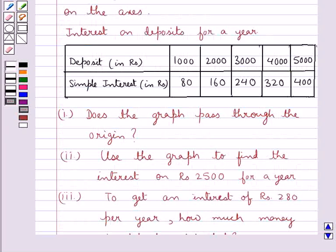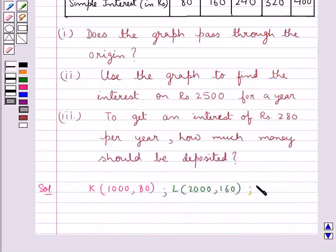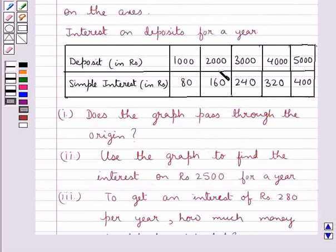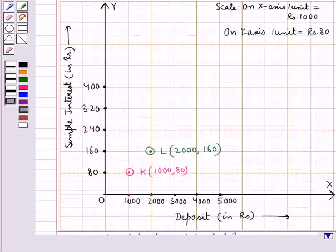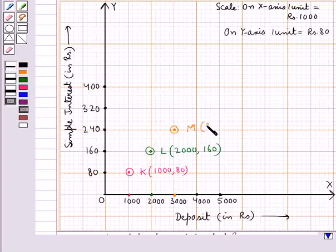The next point is M with coordinates (3000, 240), where 3000 is the deposit and 240 is the simple interest. We locate 3000 on the x-axis, then move along the y-axis to the point corresponding to 240, and mark this as M with coordinates (3000, 240).